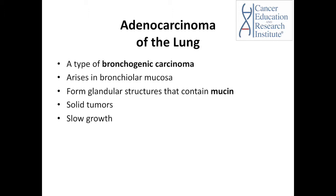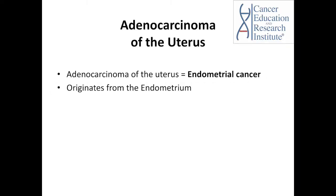Asymptomatic means showing no symptoms. Adenocarcinoma of the uterus is also known as endometrial cancer. This type of cancer originates from the tissue that lines the uterus. Endometrium means the inner lining of the uterus, so adenocarcinoma of the uterus or endometrial cancer is a carcinoma of the endometrium.